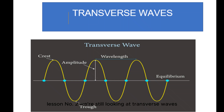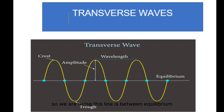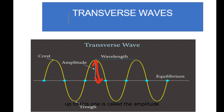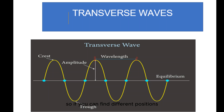Lesson number two, we are still looking at transverse waves. Let's look at this diagram. We are given this line which is the equilibrium — that's the resting point. From this point, the highest point is called the crest, which is the maximum from the point of rest. The distance from rest up to the crest is called the amplitude.